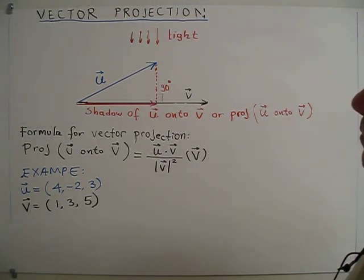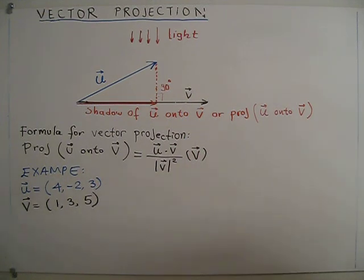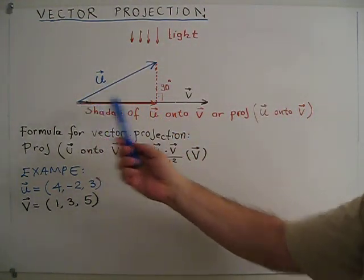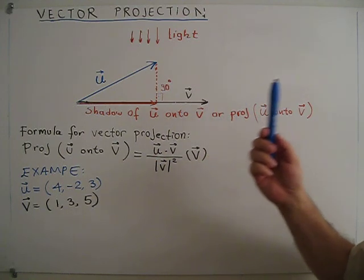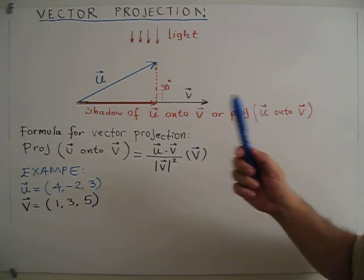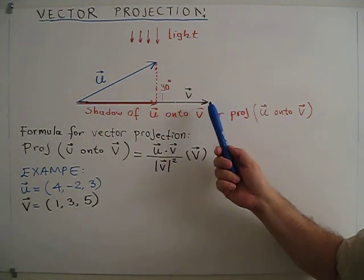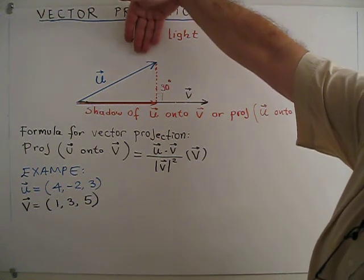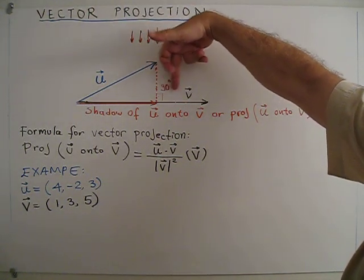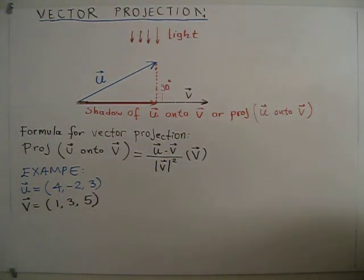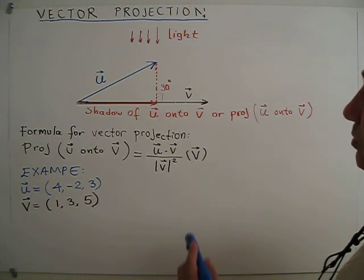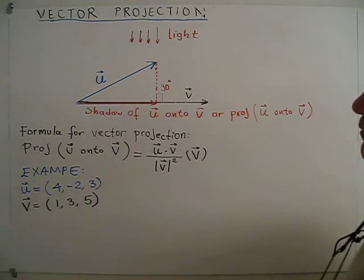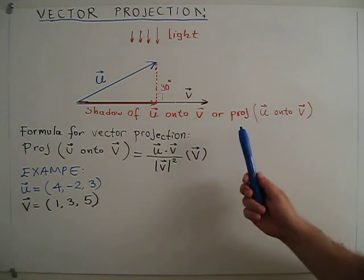Today I am going to explain vector projections. So there is one vector, this is U, the blue one. There is another vector, the black one, V. We want to find the projection of U vector onto V vector. Let's say there is a light, parallel lights, ray of lights, coming 90 degrees perpendicular to V. So in this case, what is the shadow of U onto V? This red vector will be the shadow of U onto V. So basically, projection means that same thing.